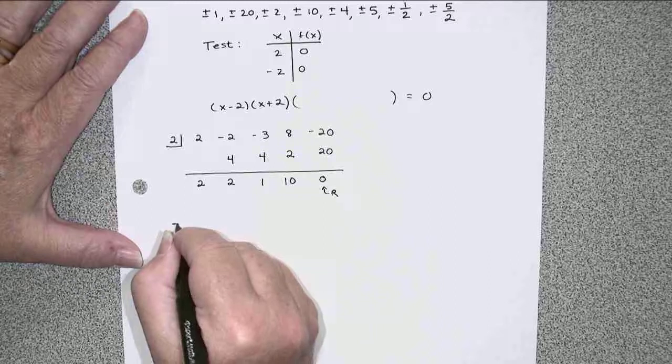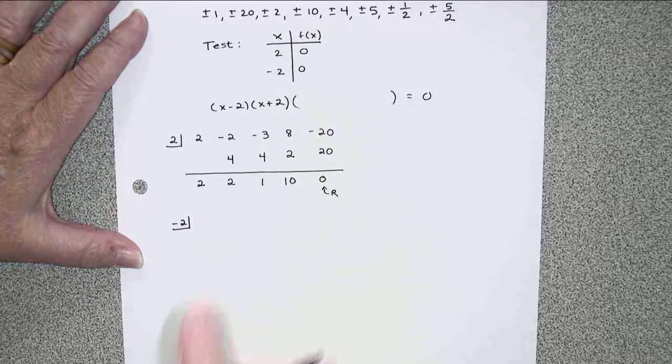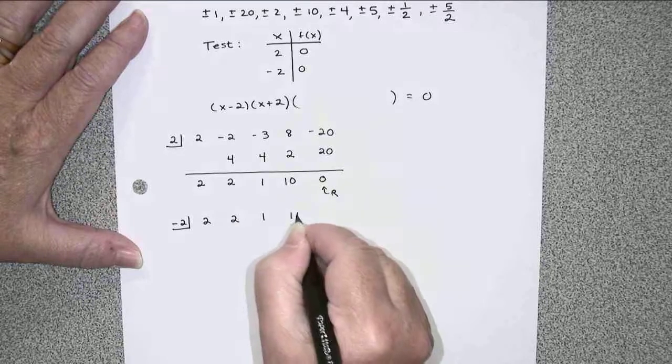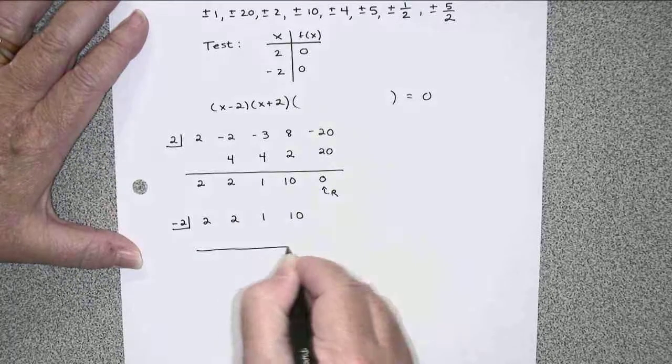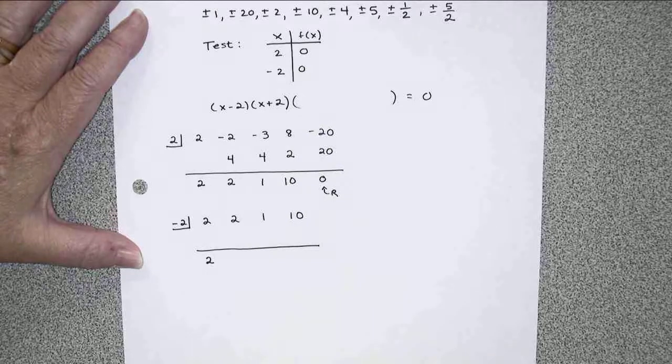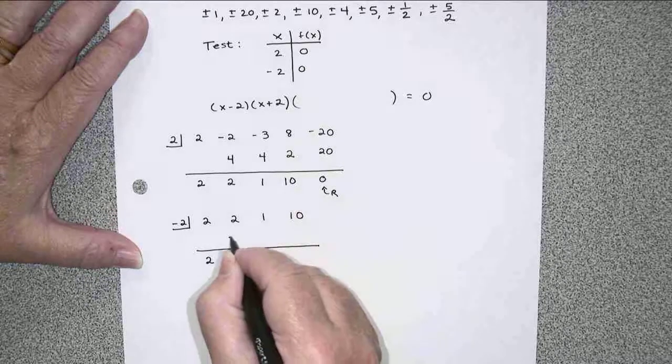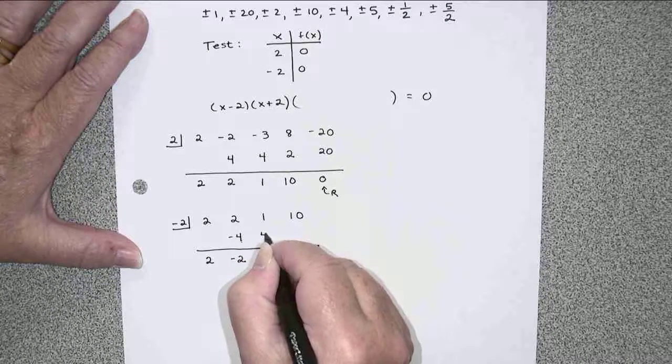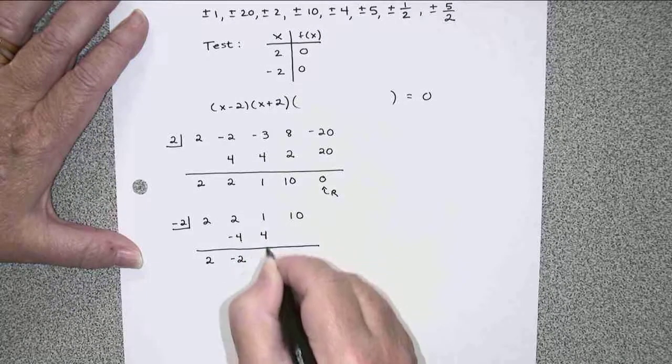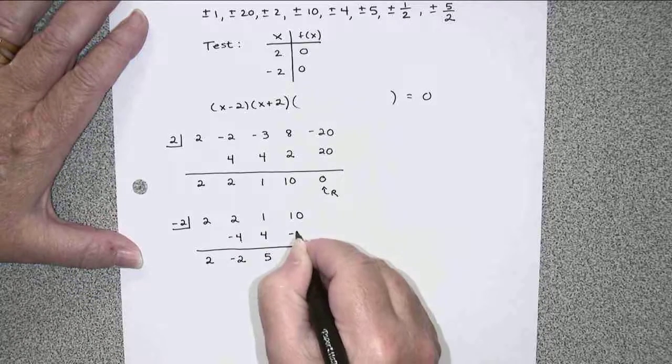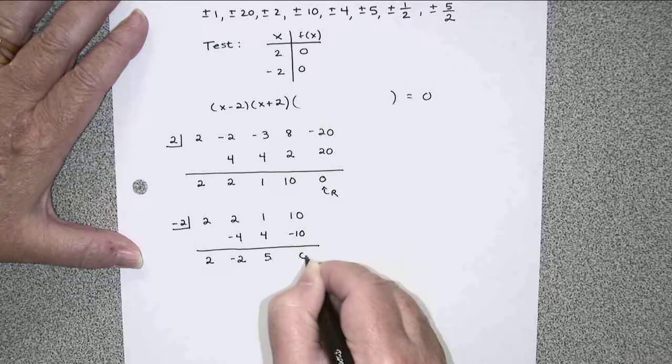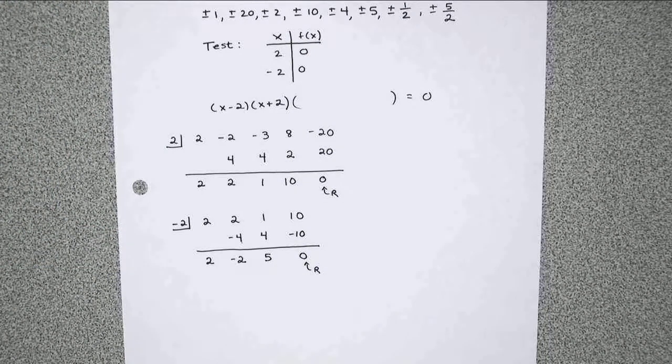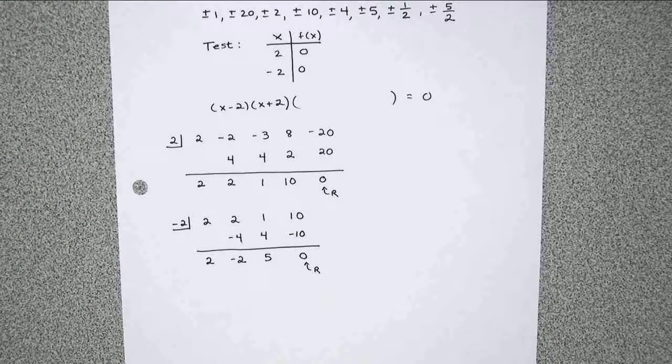My other rational zero was negative 2, and I'm just going to use what I have left down here, the result, and divide again. Bring down the 2 to start. Multiply and get negative 4, adds up to negative 2. Multiply and get positive 4, adds up to 5. Multiply and get negative 10, adds up to 0. Once again, the remainder of 0 is what we expect. If we don't get it, we're in trouble. We wouldn't have found a true rational zero.